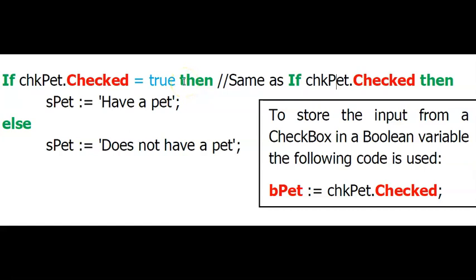If you need to store the input from the user from the checkbox in a variable, you would declare a boolean variable. And the code simply looks like this. We have the boolean variable on the left of the assignment statement. And we could say name of the object .checked.